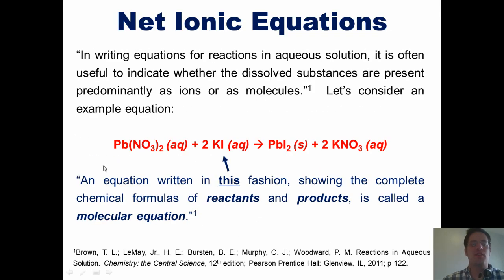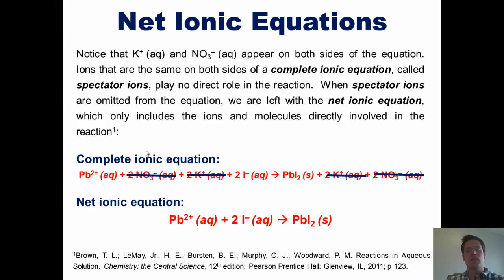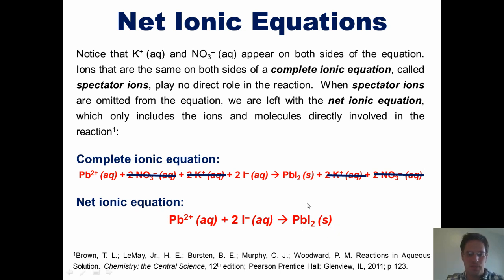What this means is that if you were to take lead nitrate and potassium iodide and throw them into water, they would do a partner swap. The lead would get together with the iodide and form an insoluble precipitate — lead iodide — while the potassium and the nitrate would dissolve completely in solution. This is summarized neatly by the net ionic equation, which only shows the ions — lead and iodide — that actively do anything, that is, form lead iodide precipitate.